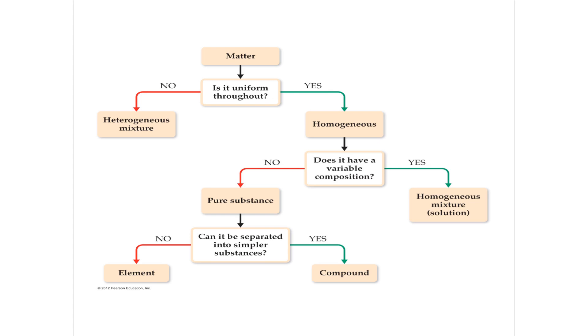If you look at that and it's homogeneous, okay you can have homogeneous without having elements or compounds. Like you could have Kool-Aid and it's homogenized everywhere you look it's the same but does it have a variable composition? If it does have a variable composition to where there's sugar in one place and water in another if you look microscopically then you've got a solution. That's a homogeneous mixture.